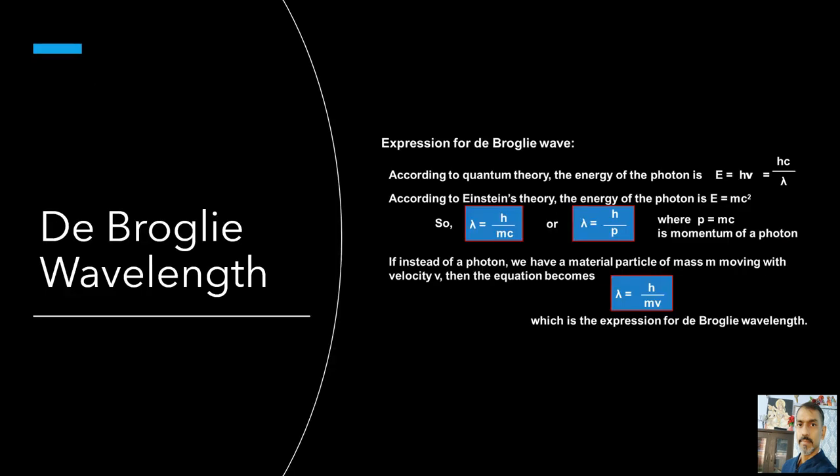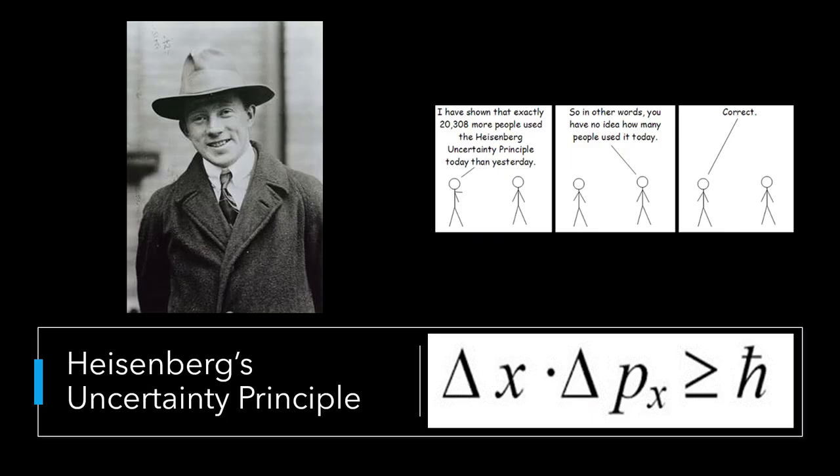De Broglie proposed that the wavelength associated with the particle of momentum p is given by h by p equal to h by m v, where m is the mass of the particle and v its speed. This equation is known as the de Broglie relation and the wavelength of the matter wave is called de Broglie wavelength. The dual aspect of matter is evident in the de Broglie relation. On the left hand side, lambda, the wavelength, is the attribute of a wave, while on the right hand side the momentum p is a typical attribute of a particle. Planck's constant h relates the two attributes. De Broglie equation for a material particle is basically a hypothesis whose validity can be tested only by experiment. However, it is interesting to see that it is satisfied also by a photon.